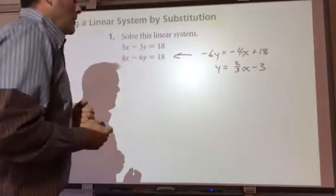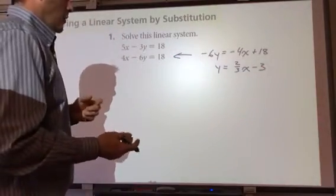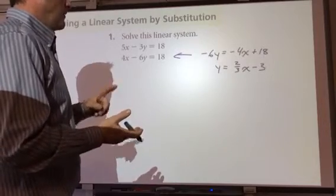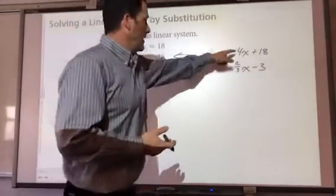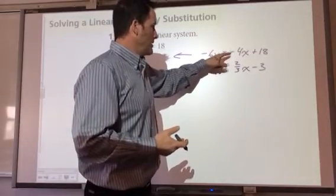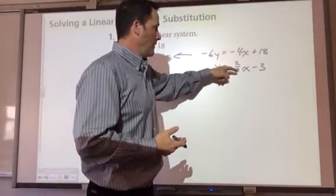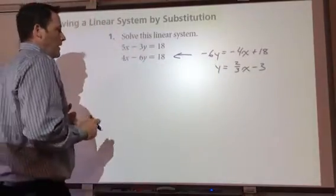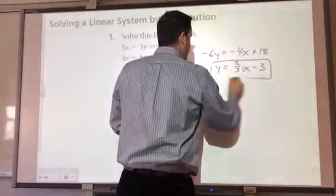Now, I did that pretty quick. What I did was I subtracted 4x from both sides and I divided by negative 6. Negative over negative made that positive, and then I simplified it. I know I'm going quick. These are steps we should be comfortable with by now. But now, I know what y is equal to.